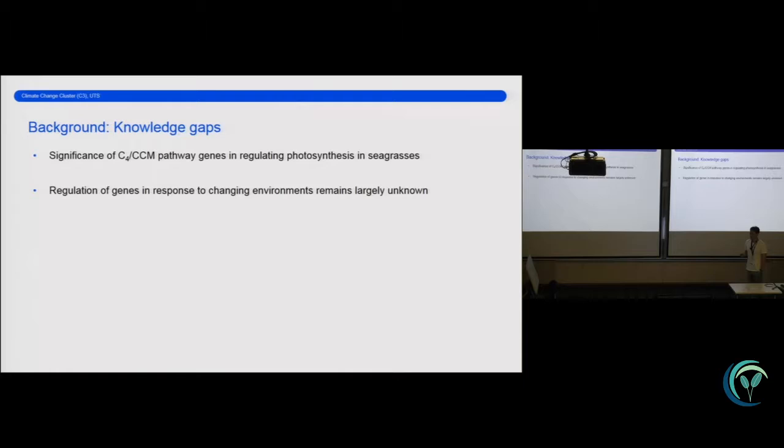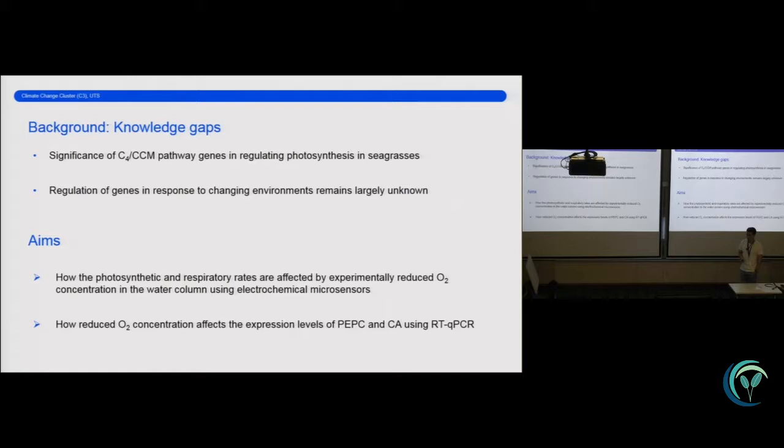So this led us to sort of wonder a couple of questions. One is, what is the significance of these genes, and how are they regulated when seagrasses photosynthesize? And if they are regulated, how are they responding to different changes in the environment? And so the specific aims of my project was to investigate how the photosynthetic and respiratory rates are affected by experimentally reduced oxygen concentration in the water column. We did this by using electrochemical micro-sensors. We also wanted to investigate how the reduced oxygen concentration affects the expression levels of phosphoenolpyruvate carboxylase and carbonic anhydrase, and we did this by using molecular methods such as reverse transcription real-time QPCR.